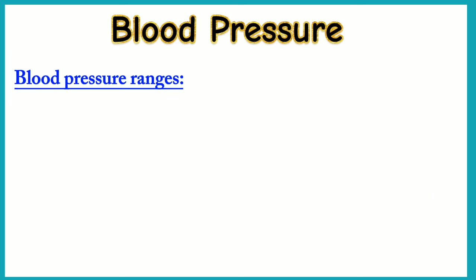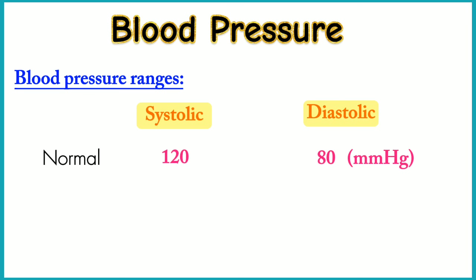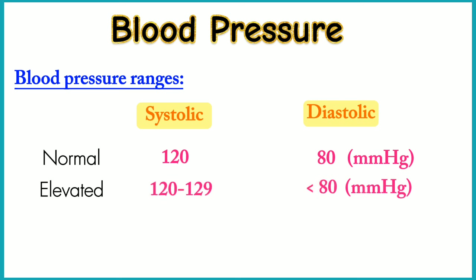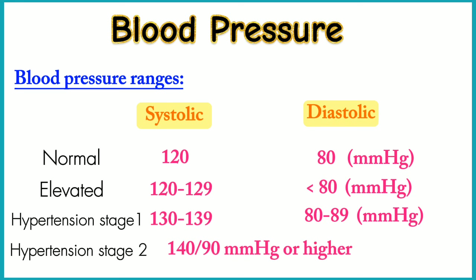Following are the blood pressure ranges. Blood pressure numbers of less than 120/80 mmHg are considered within the normal range. Elevated blood pressure is when readings consistently range from 120 to 129 systolic and less than 80 mmHg diastolic. Hypertension stage 1 is when blood pressure consistently ranges from 130 to 139 systolic or 80 to 89 mmHg diastolic. Hypertension stage 2 is when blood pressure consistently is 140/90 mmHg or higher.